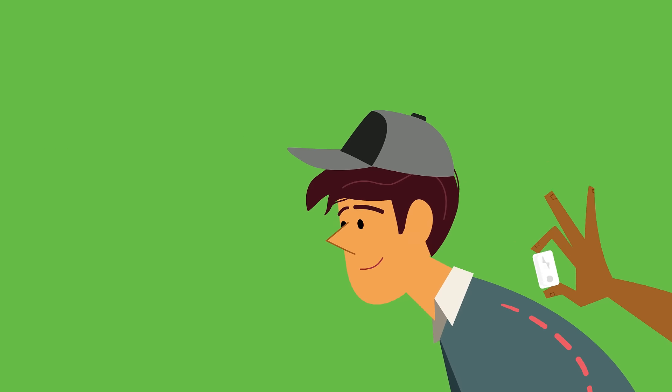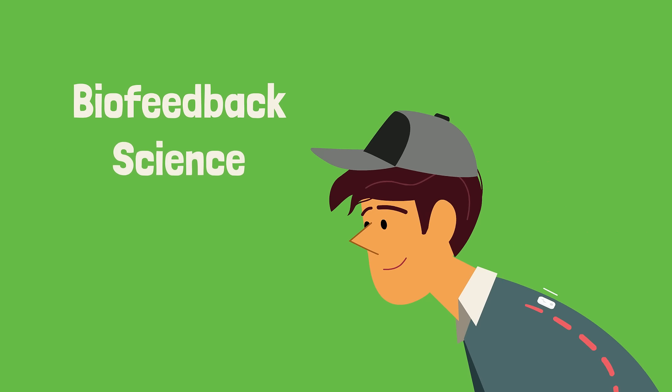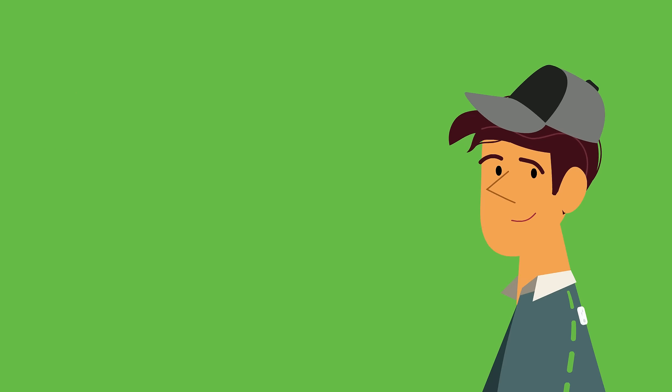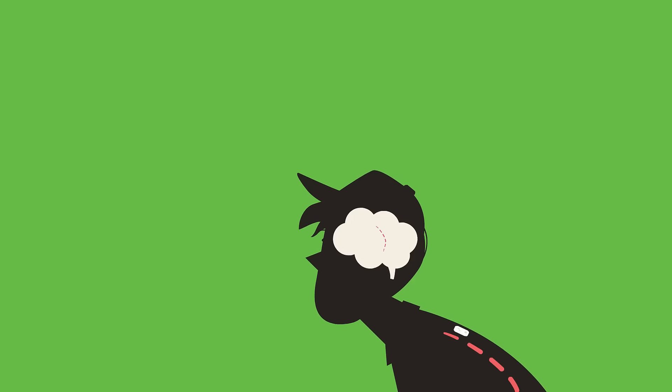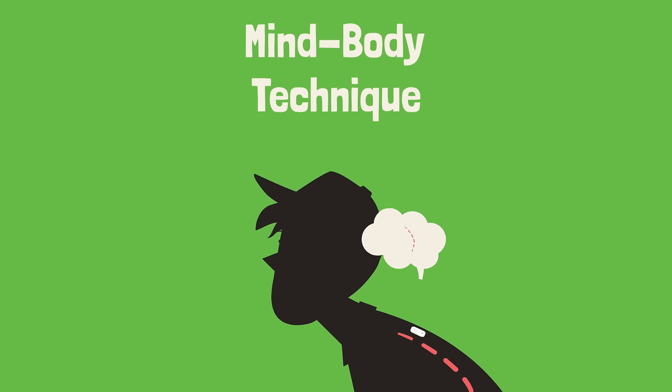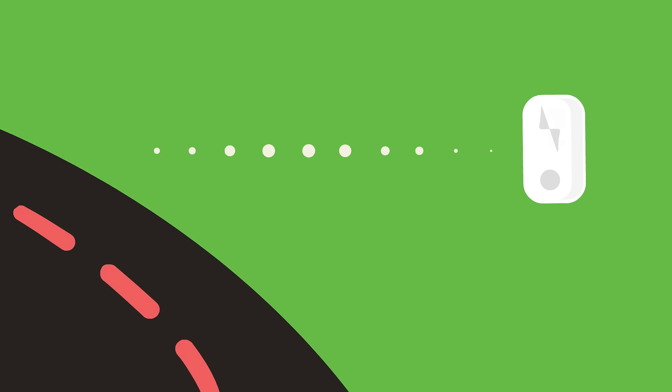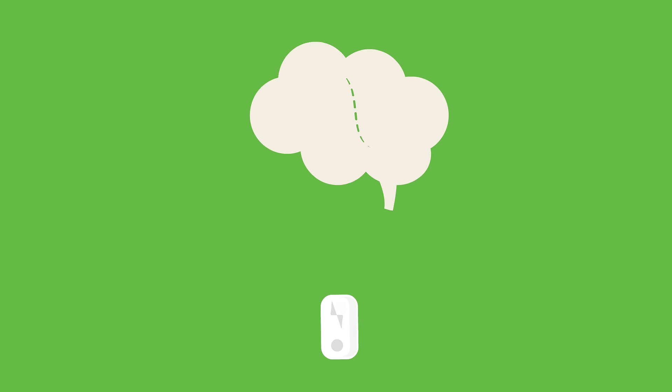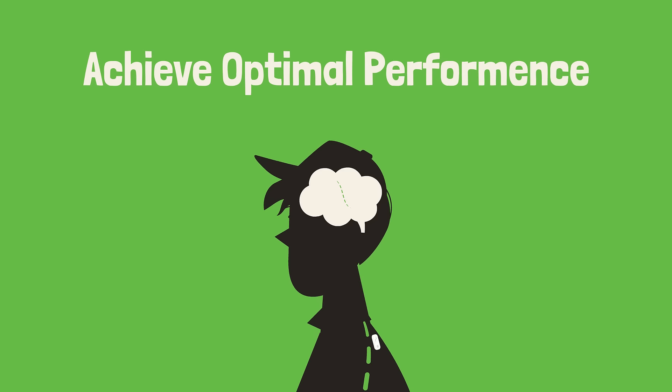More specifically, Upright puts what's called biofeedback science into practice to make healthy posture a new and natural behavior. So what is biofeedback science? Biofeedback is a mind-body technique that teaches and trains your brain to control automatic body functions to achieve optimal performance.